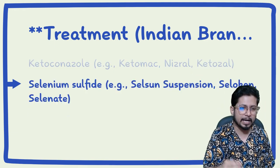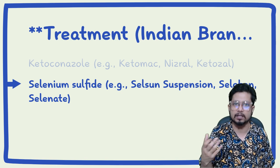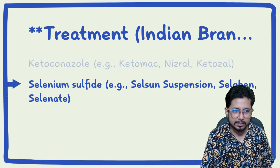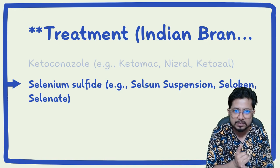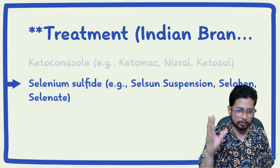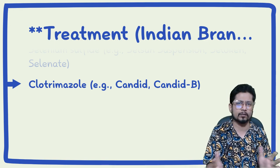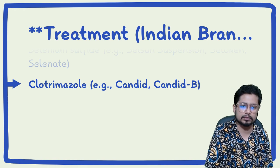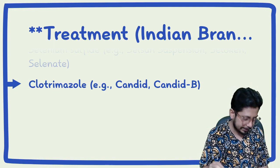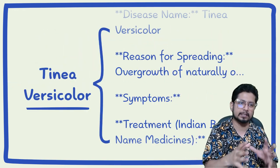The next treatment option is selenium sulfide. Indian brand names include Selsun suspension, Selokin suspension, and Selenate suspension — you can use any of these. Finally, clotrimazole works wonderfully for any kind of fungal infection. An Indian brand name example is Candiid, which can be applied locally to the affected area for quicker relief. These are all the treatment options for Tinea Versicolor.